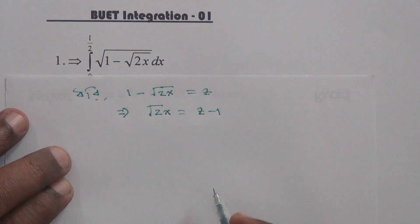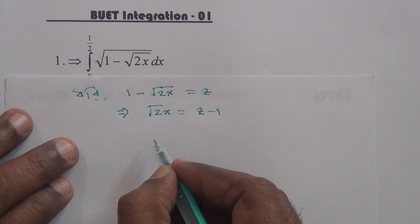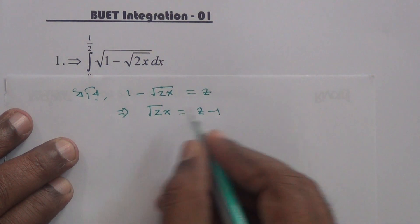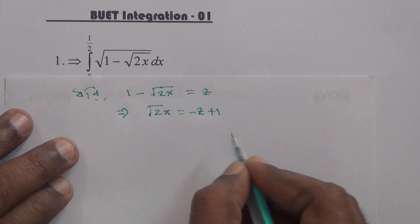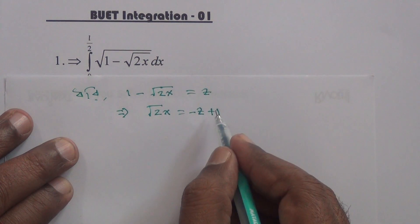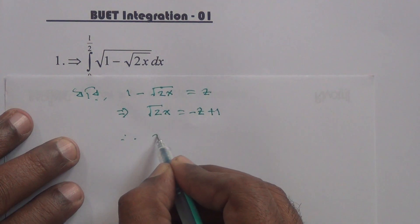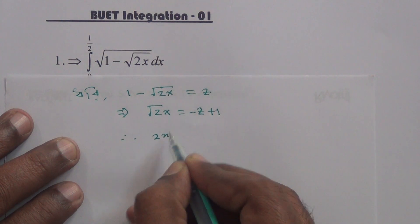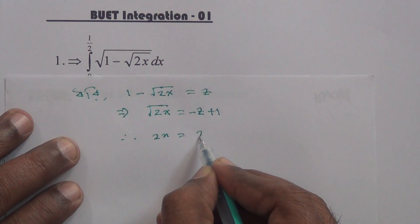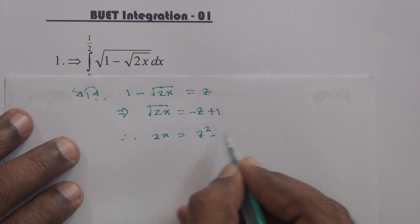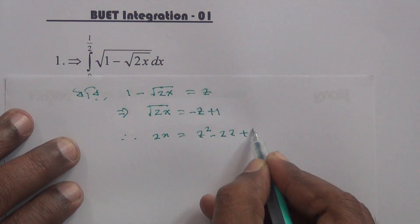Look, this is the same thing. How do you see this is the same thing? It gives us z squared minus 2z plus 1.